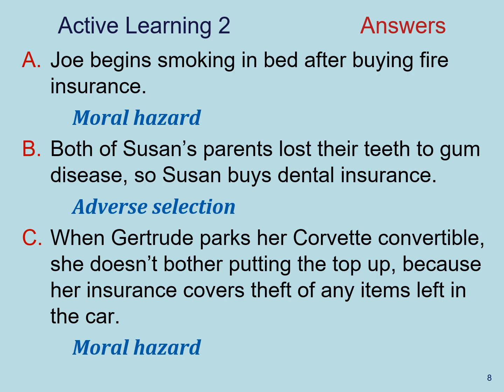For scenario B, both of Susan's parents lost their teeth to gum disease. Susan is likely to have a genetic predisposition to gum disease, so she knows more than the insurance company about her risk. Therefore she buys dental insurance because she benefits the most from it — this is an example of adverse selection. For scenario C, when Gertrude parks her Corvette convertible, she does not bother putting the top up because her insurance covers theft of items left in the car. She is taking a hidden action that adversely affects the insurance company — that is moral hazard.